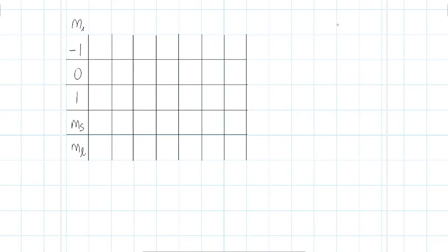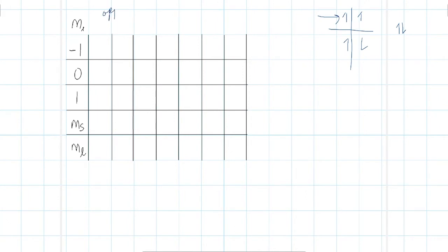Now we consider opposite spin combinations. One electron is up-spin and another is down-spin, placed in separate orbitals. The value of ms is +½ + (−½) = 0. We put one electron in ml=1 and one in ml=0. For ml: 1×1 plus 1×0 equals 1, so ml=1 for this combination.